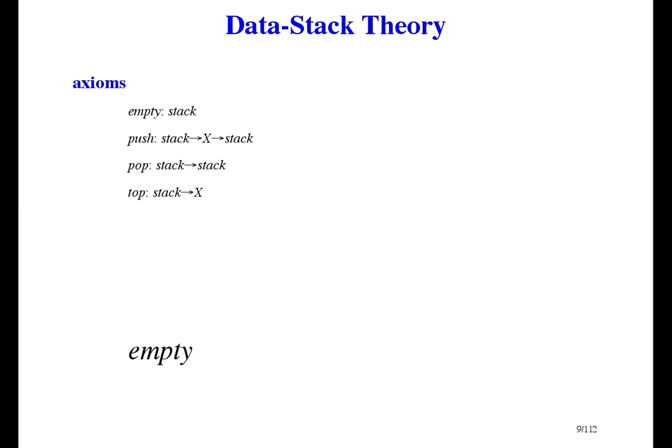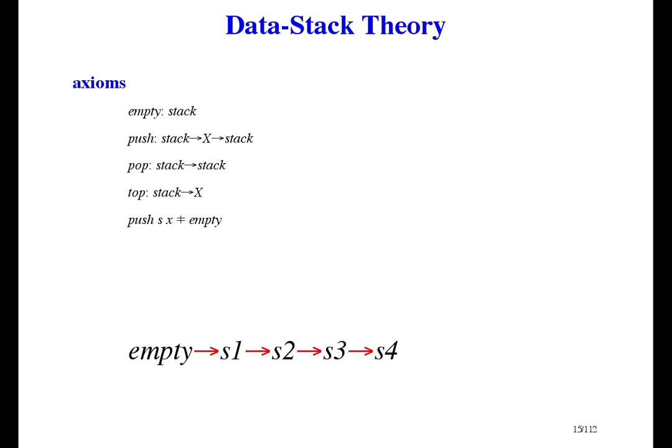Here's the empty stack. If we push something onto it, we get another stack — let's call it S1. And if we push something onto that, we get another stack, let's say S2. Push again and get S3. This picture should be a tree because from each stack you can get many different stacks by pushing different things onto it. If we push again, how do we know we get a different stack from the ones we already have? Push just says we get a stack — it doesn't say a different stack. So as far as these axioms are concerned, it could be empty. Of course, that's not what we want, so we need another axiom to prevent that.